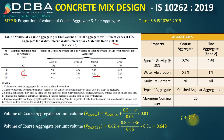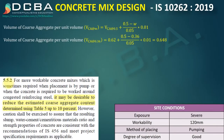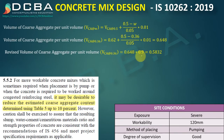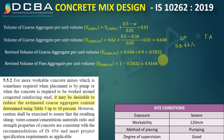Since the method of placing is pumping, clause 5.5.2 requires reducing the coarse aggregate content by up to 10% to avoid congestion at reinforcement. Applying a 10% reduction: 0.648 × 0.9 = 0.5832. So coarse aggregate is 58.32% and fine aggregate is 1 − 0.5832 = 0.4168, i.e., 41.68%, of the total aggregate volume.